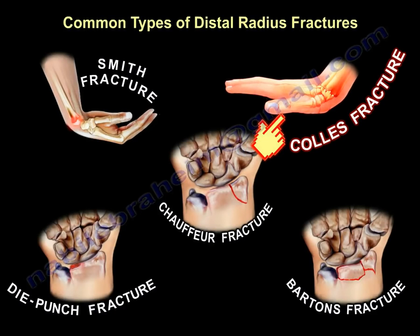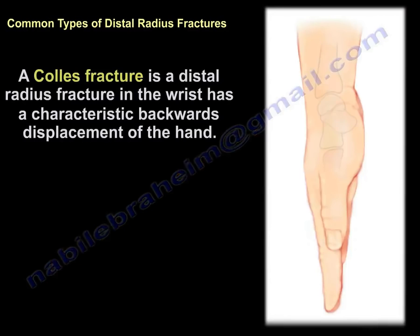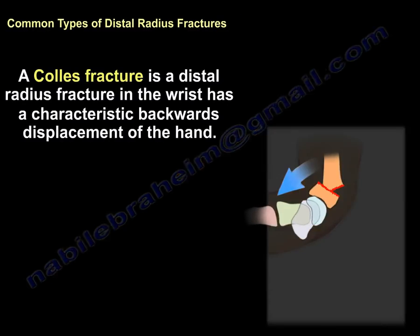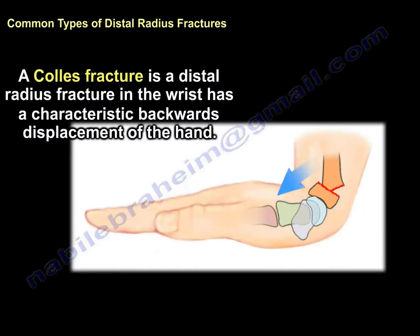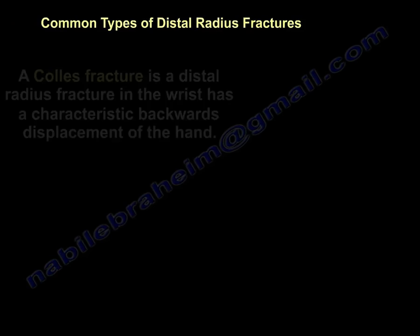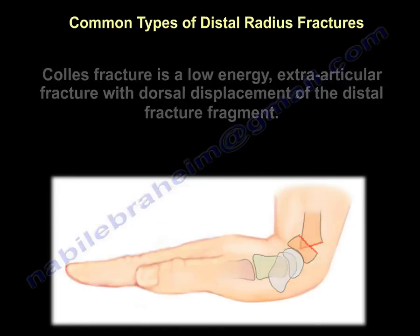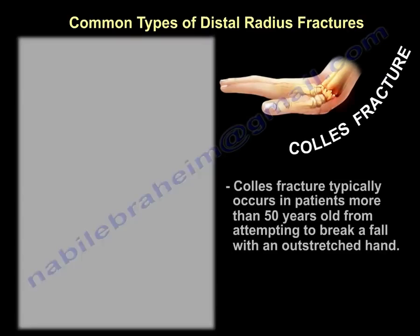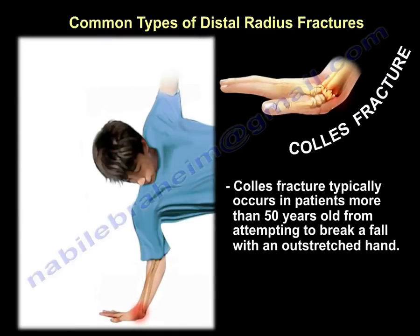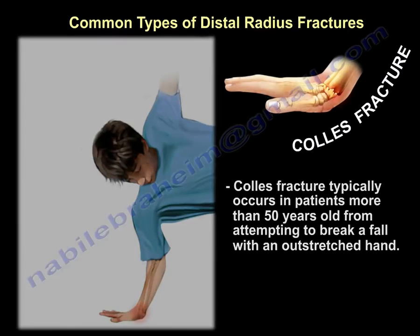The most common type is called Colles fracture, which is a fracture of the distal radius that has characteristic backward displacement of the hand. It is a low-energy, extra-articular fracture with dorsal displacement of the distal fragment. It usually occurs in patients above the age of 50 years old when they attempt to break a fall with an outstretched hand.